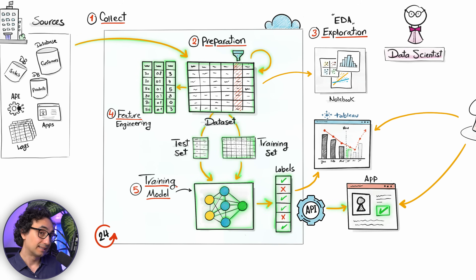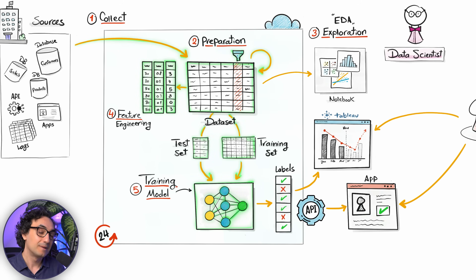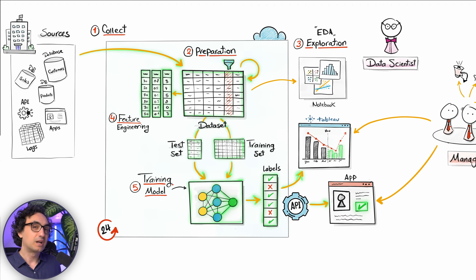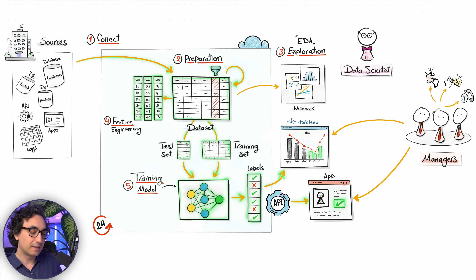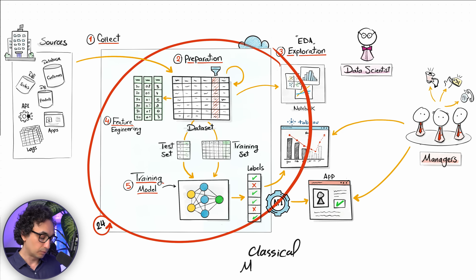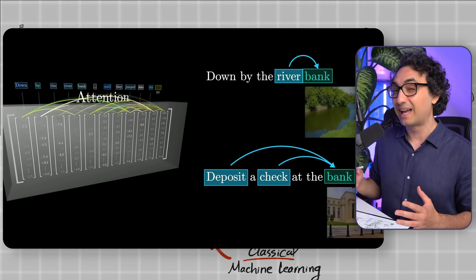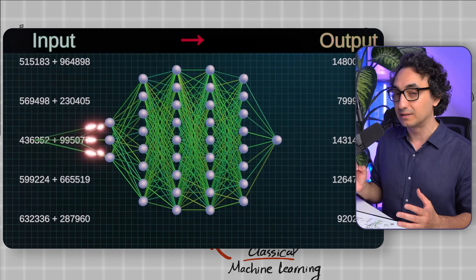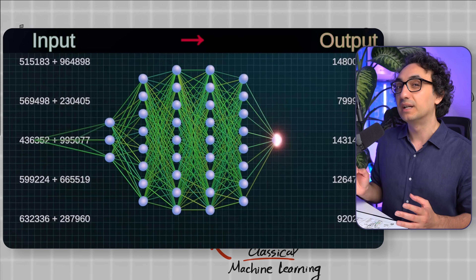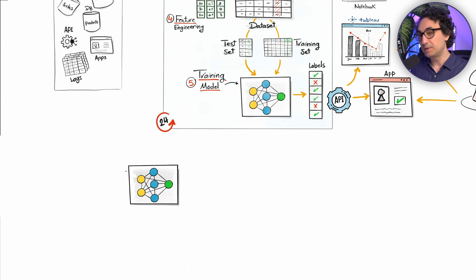If you're lucky enough to have ML engineers or MLOps specialists, they handle the deployment. Otherwise, you do it yourself. Everything described so far — collecting data, preparing data, training the model — is the classical machine learning process.